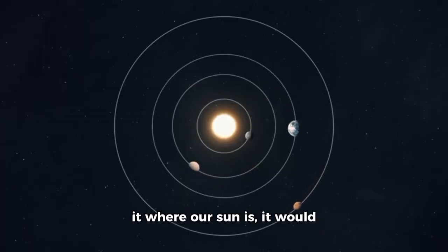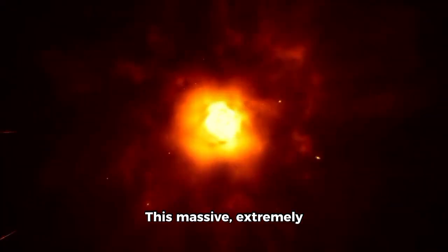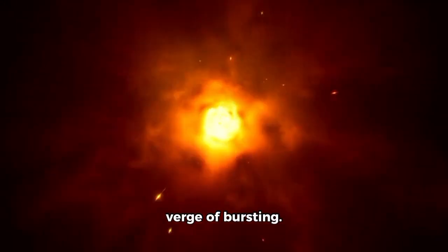Also, if you were to position it where our sun is, it would extend all the way out to the orbit of Jupiter. This massive, extremely unstable star is on the verge of bursting.